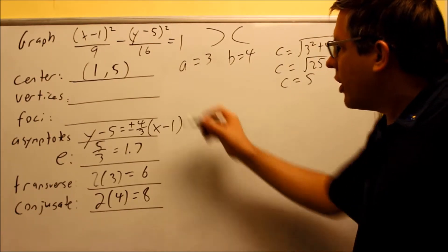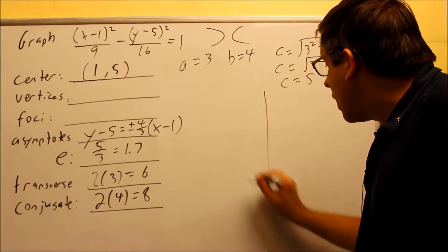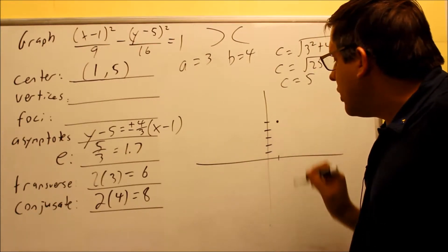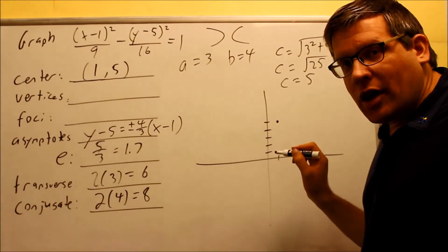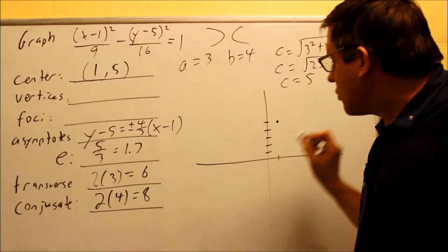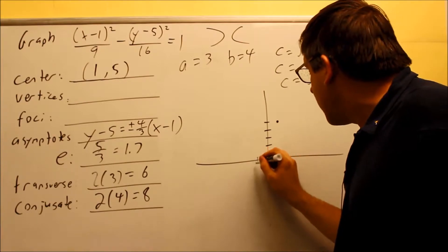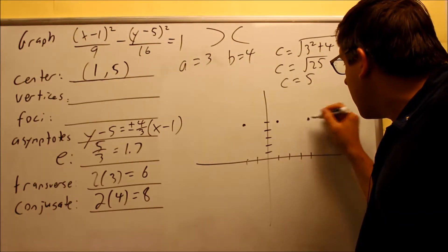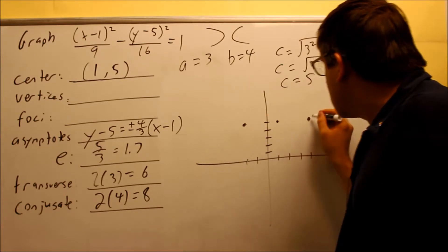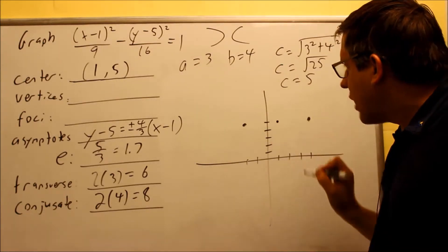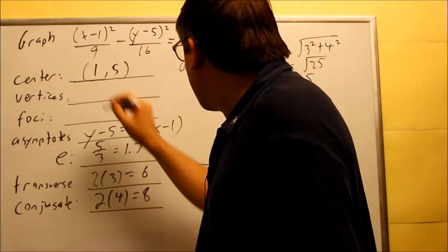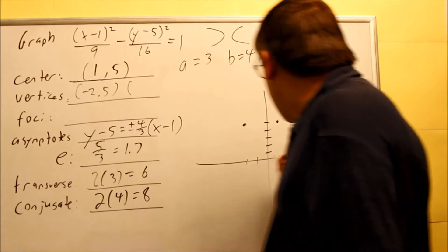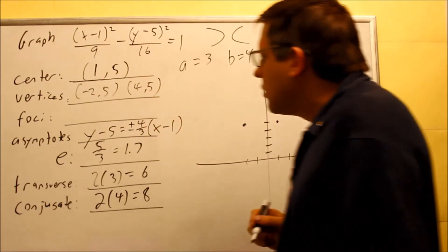Now we're ready to draw the graph and get the vertices and foci. Start at the center at (1, 5). Since x comes first and it opens left and right, we go 3 places left and 3 places right using the a value. These points are your vertices. Reading the coordinates directly off the graph: the left vertex is (negative 2, 5) and the right vertex is (4, 5).